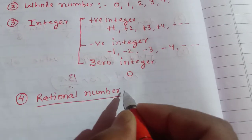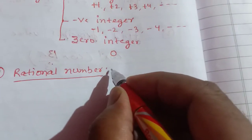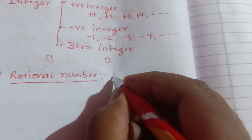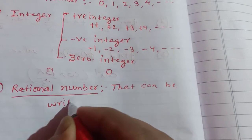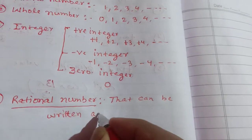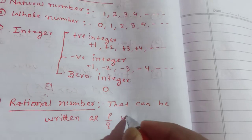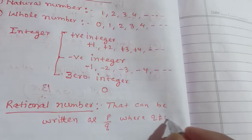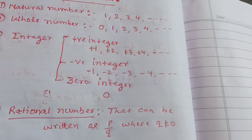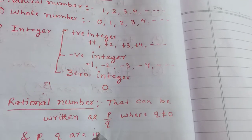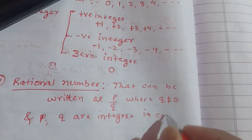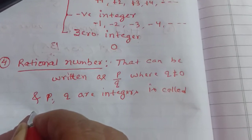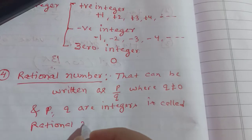Rational Number. We have to discuss rational numbers from the previous class. The definition of rational number: the number that can be written as P by Q, where Q is not equal to 0 and P and Q are integers, is called a rational number.